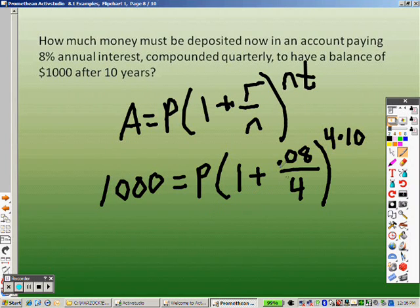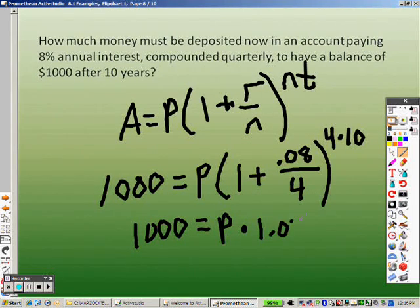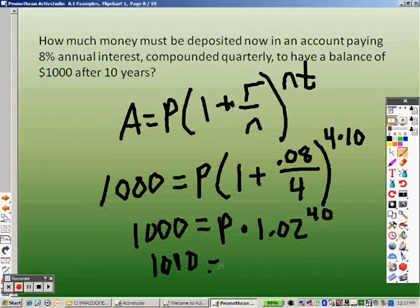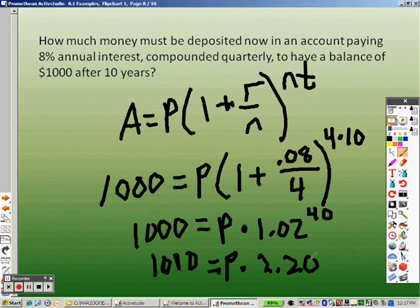Okay, so, I add that together. 1 plus .08 divided by 4. That's 1.02. So, really, I have 1,000 equals P times 1.02 to the 40th power, because 4 times 10 is 40. Well, 1.02 to the 40th power is a huge decimal. So, really, I get 1,000 equals P times 2.208, and I'll stop right there.